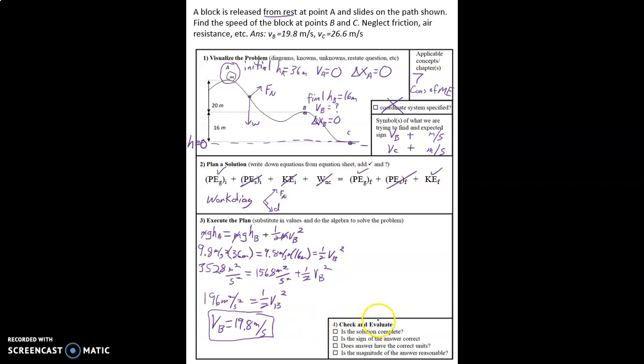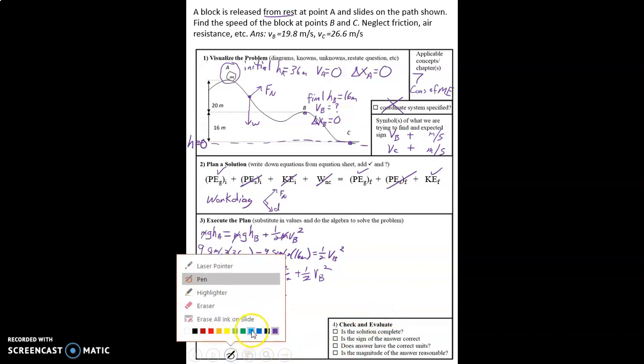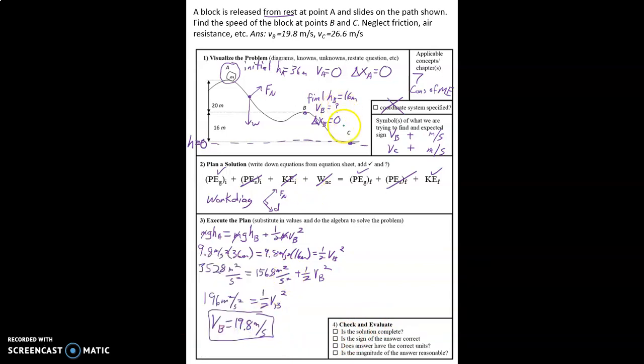So let's see. We're supposed to find the speed at points B and C. So no, the solution's not complete. We need to go back. All right, let's look here at point C. So I'm just going to write these down here at the bottom. The velocity at C is an unknown. The height at C is zero. And the spring, well, it's non-existent.